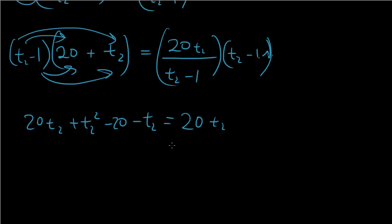Let's just try and simplify this. Move everything to the left. The 20 T2 will cancel out with the 20 T2. So I have T2 squared minus T2 minus 20 equals zero. And I have a quadratic equation.